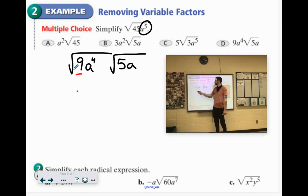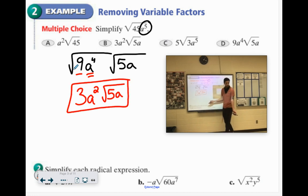The square root of 9 is 3 and then remember when you square root an exponent you just divide the exponent by 2. 4 divided by 2 is 2. So we have 3a². And then our √5a doesn't have anything left that is a perfect square so that would be our final answer.